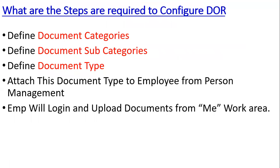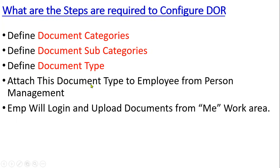To configure Document of Records in human capital management, first we need to define document categories, then define document subcategories, and then define the document type. When defining a document type, it will ask for the document category and subcategory - that's why we define those first. Categories and subcategories are basically lookups we configure. Finally, we attach the document type to the employee.